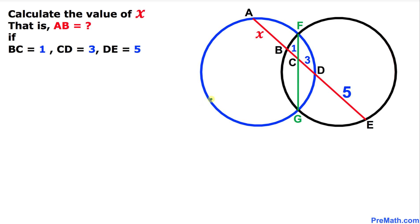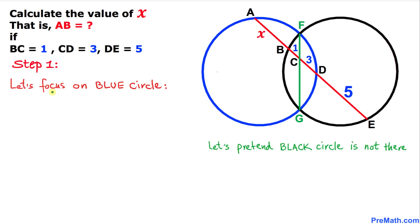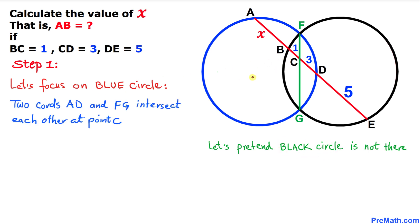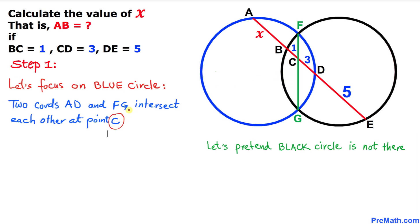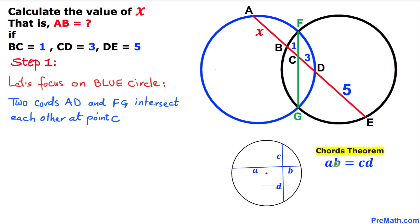Let's get started with our solution. For the first step, let's focus on the blue circle and pretend the black circle is not there. We can see that we have two chords AD and FG intersecting each other at point C. Here is the intersecting chords theorem: a times b equals c times d, where the two parts of one chord multiply to equal the two parts of the other chord.